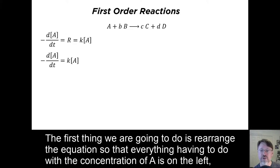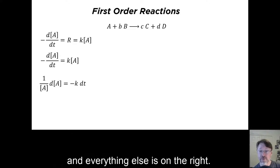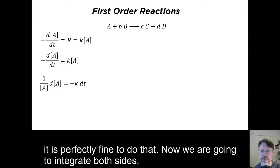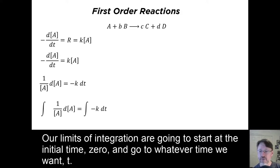We are going to assume that A is the species whose concentration we are able to monitor, so we will write the rate in terms of that derivative. The first thing we are going to do is rearrange the equation so that everything having to do with the concentration of A is on the left, and everything else is on the right. Now, it may look a little strange to split up the derivative like this, but when solving differential equations of this type, it is perfectly fine to do that. Now, we are going to integrate both sides. Our limits of integration are going to start at the initial time, 0, and go to whatever time we want, T.